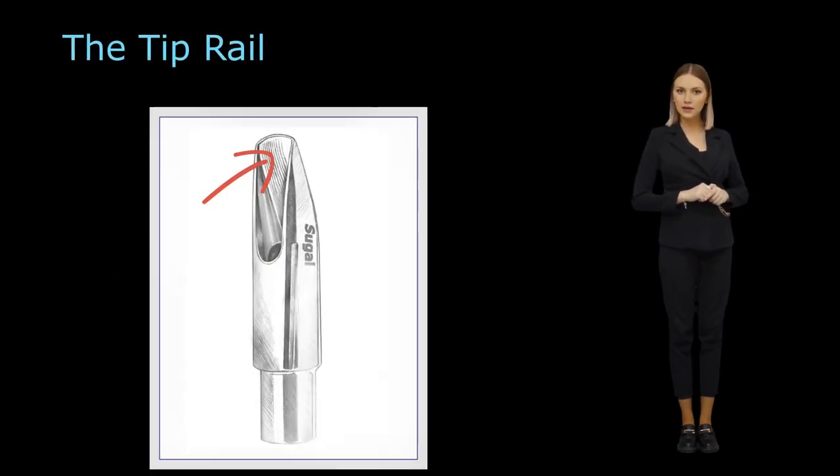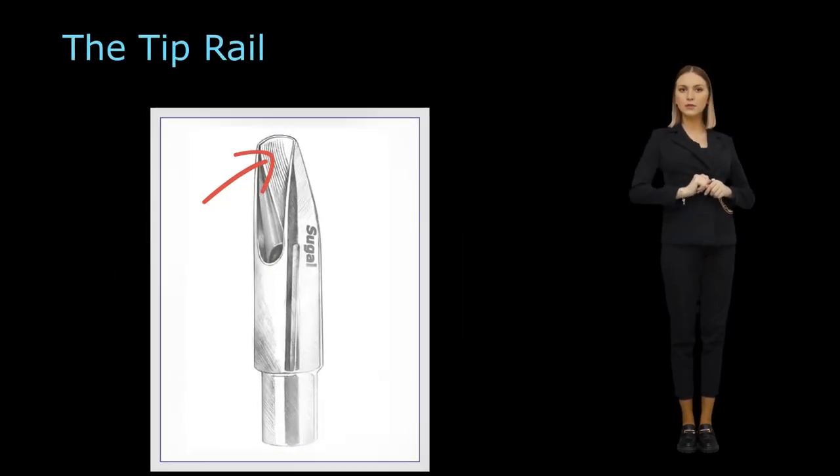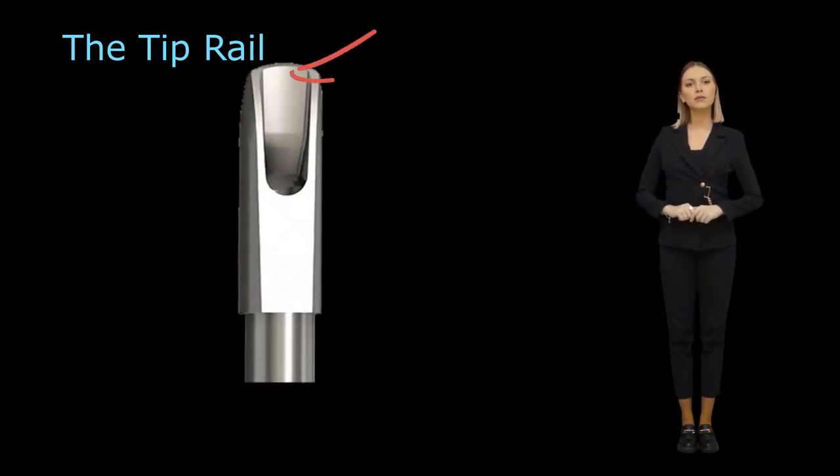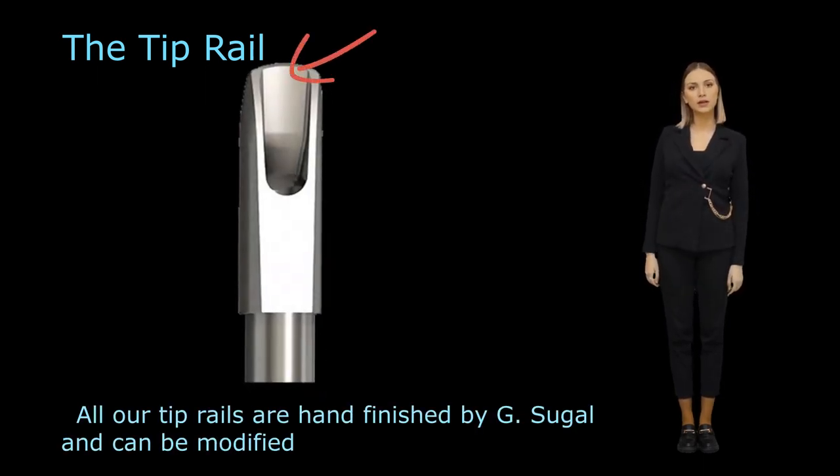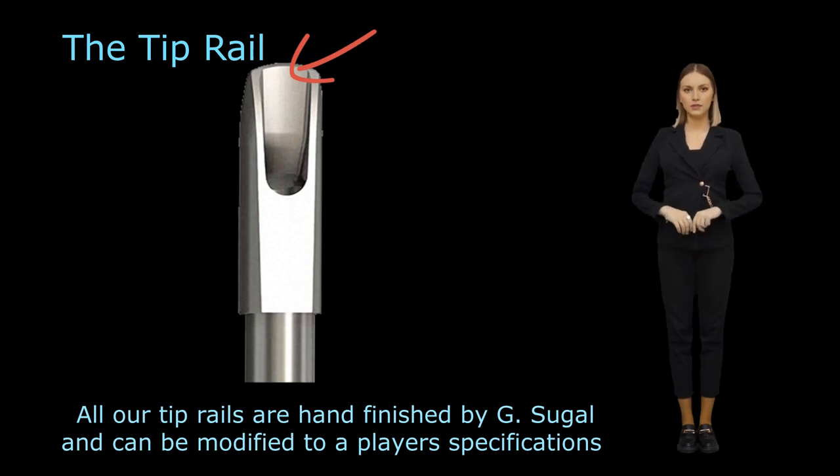The tip rail can be found at the very tip of the mouthpiece. It is the point where the front of the reed seals and vibrates against the mouthpiece. The thickness of the tip rail influences the mouthpiece's response. If it is too thin, the mouthpiece may produce a squeaking sound, and if it is too thick, the mouthpiece may sound weak or dull.